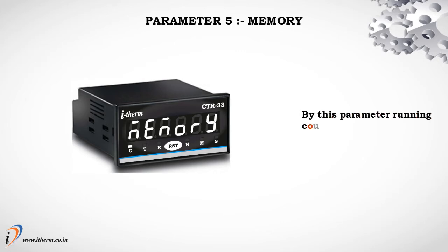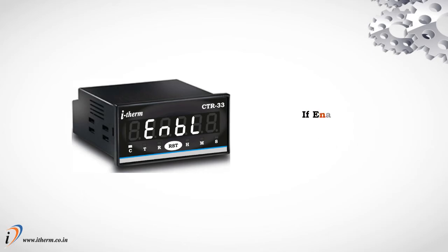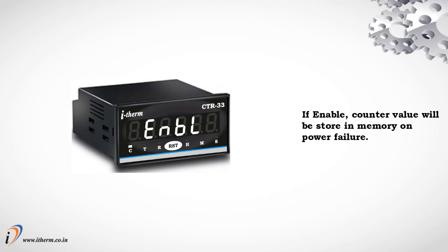Parameter 5: Memory. By this parameter, the running count value can be stored. If disabled, the running count value cannot be stored on power failure, and on the next power on the counter will be reset. If enabled, the counter value will be stored in memory on power failure.